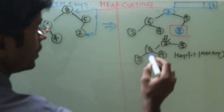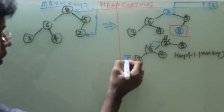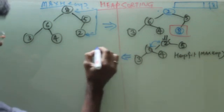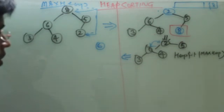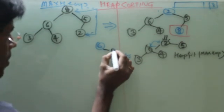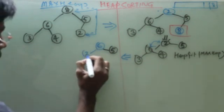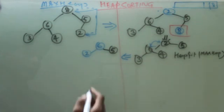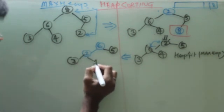So I will heapify it to become maxheap. I can see 6 is greater than 2. So the new tree will come like this: I have 6, I have 5, I have 2, I have 3, I have 4.